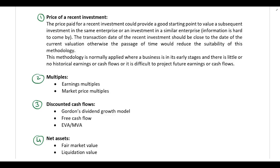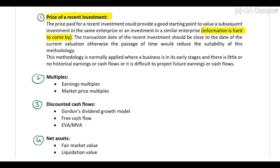First, let's look at the price of a recent investment. Assume we own a small bakery and we are looking at selling it. Using the price of a recent investment means we need to find a similar bakery in the same location that was also sold recently. This information is very hard to come by, which is why this method is not used very often. It is going to be difficult to find a similar bakery in the same location, and additionally that bakery must have been sold within a reasonable timeframe — for example, not 10 years ago.